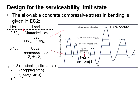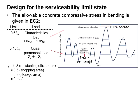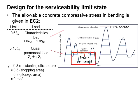The characteristic load represents the load conditions of the beam for at least 95% of the cases. It represents the most critical conditions of a beam to be serviced throughout its life. As for the quasi-permanent load, it is the least critical condition, where its variable actions are nearly permanent throughout its service life.